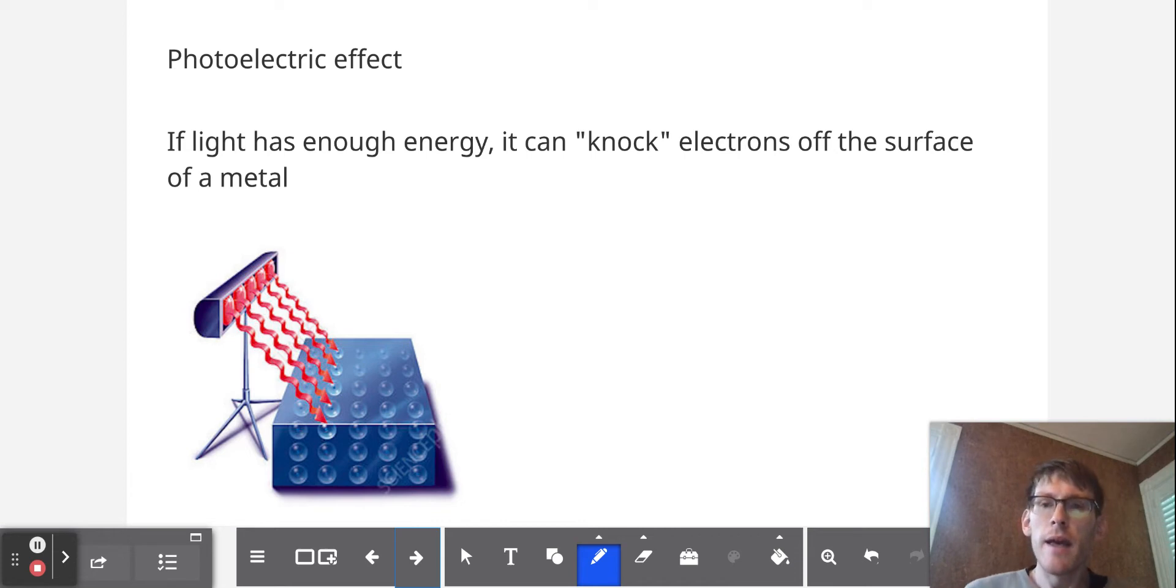You see, if light has enough energy, it can knock electrons off the surface of a metal. That's actually why metals look shiny. It's that you're seeing electrons getting pushed off the surface of the metal by the light. But what is it that causes light to have enough energy?